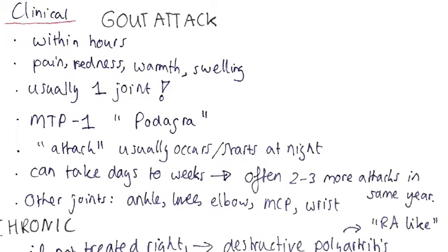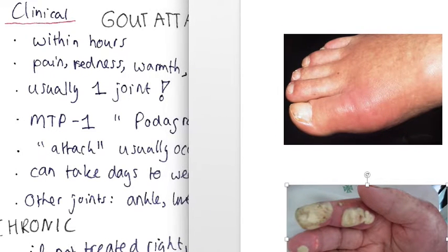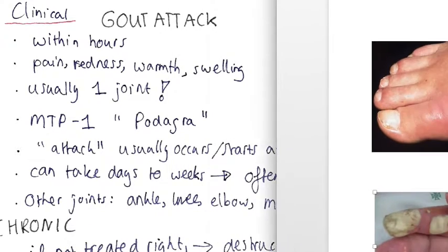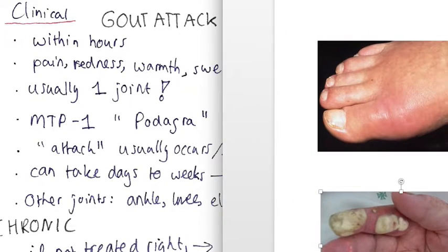So let's get to the clinical image and I will show you a picture of it. So over here, this is what it looks like. This is a gout attack and this can start within hours. What you see over here is that the patient likely has pain in his joint, there's redness, there's heat, warmth, it is swollen.